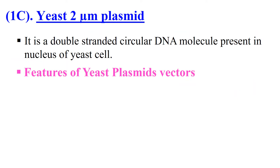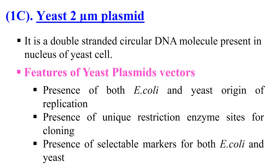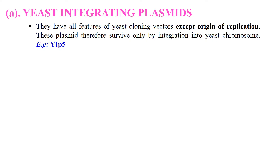Next is the yeast 2-micron plasmid. Beside pBR322 and pUC series of plasmid vectors, yeast also contains a plasmid known as the yeast 2-micron plasmid. It is a double-stranded circular DNA molecule present in yeast. Its features include origin of replication for both E. coli and yeast, unique restriction sites for cloning, and selectable markers for both E. coli and yeast. These yeast 2-micron plasmids may be: first, yeast integrative plasmid (YIp) — these are plasmids which can only survive if they integrate themselves into the yeast chromosome. An example of this vector is YIp5.